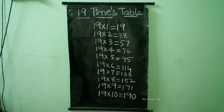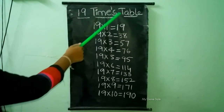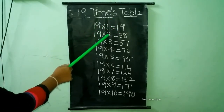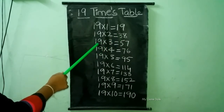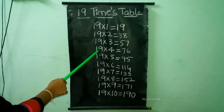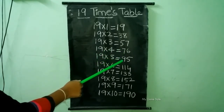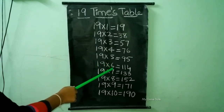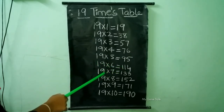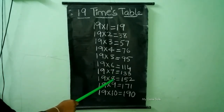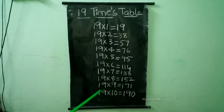19 times table. 19 times 1 is equal to 19. 19 times 2 is equal to 38. 19 times 3 is equal to 57. 19 times 4 is equal to 76. 19 times 5 is equal to 95. 19 times 6 is equal to 114. 19 times 7 is equal to 133. 19 times 8 is equal to 152. 19 times 9 is equal to 171. 19 times 10 is equal to 190.